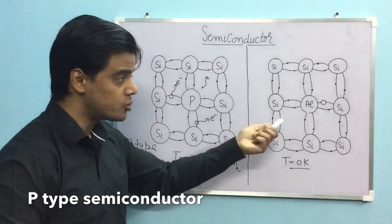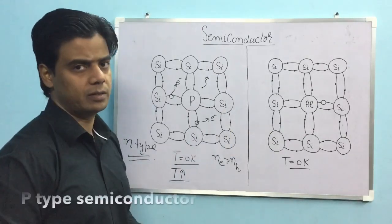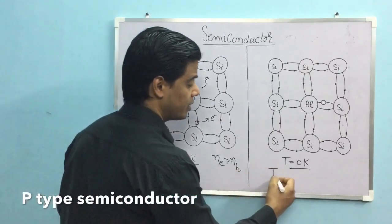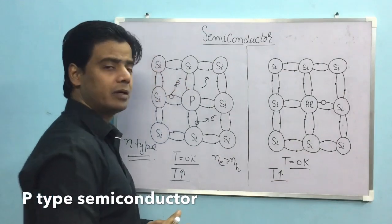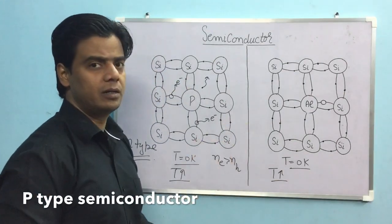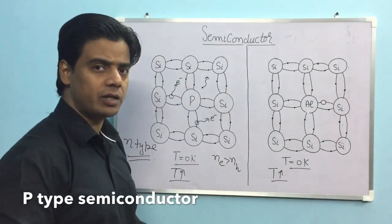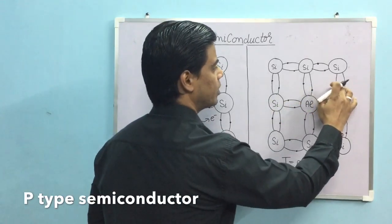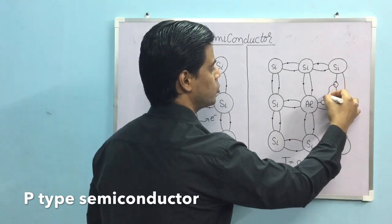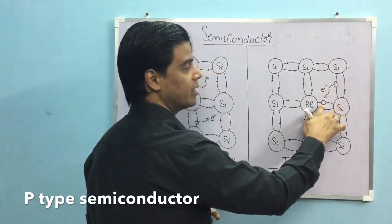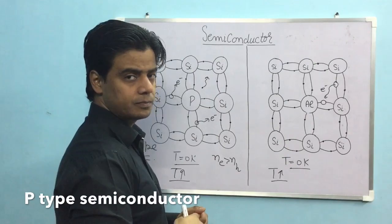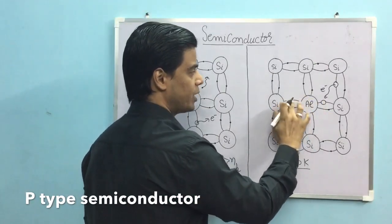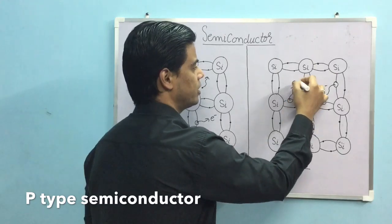At zero Kelvin, there is no free electron, so this structure is also behaving as an insulator. If we keep increasing the temperature, you are indirectly giving energy to electrons. As soon as electrons get energy, they will come out of their bonds. An electron leaves its seat and moves to a nearby vacancy.